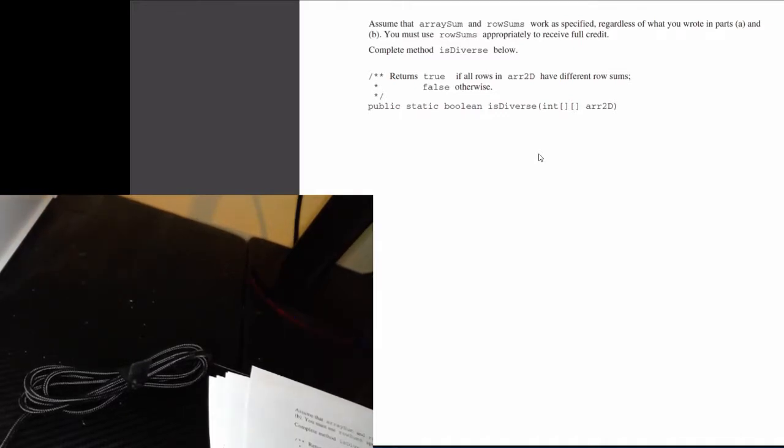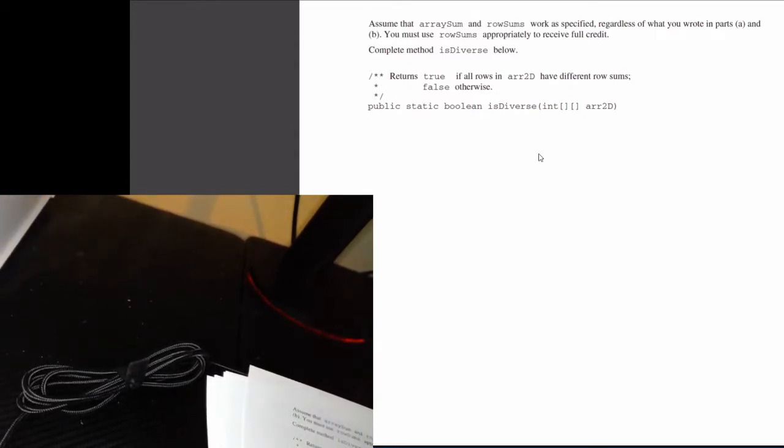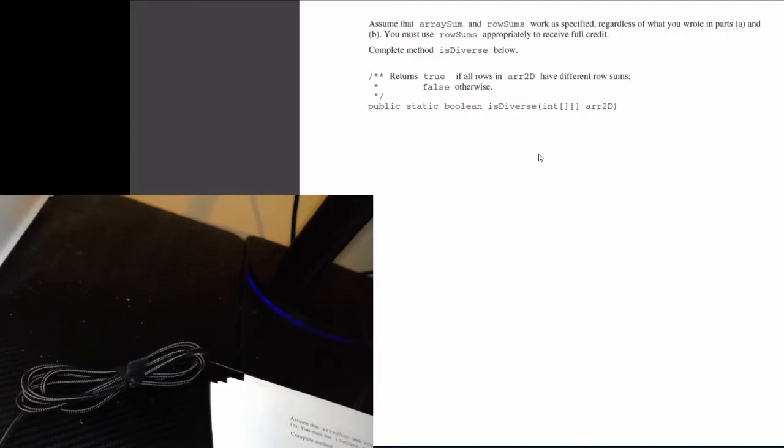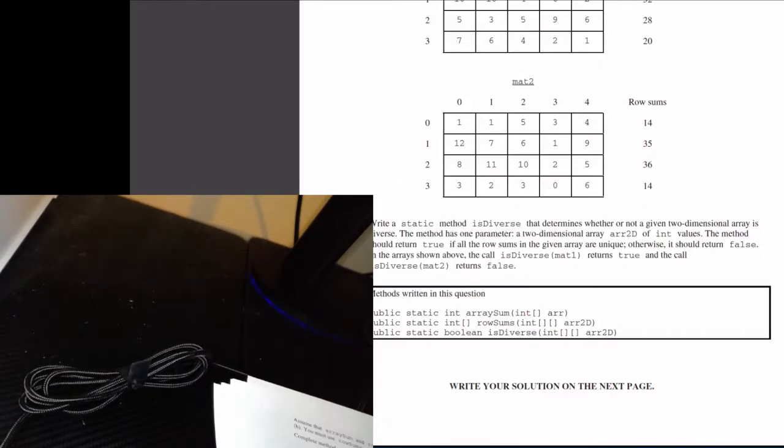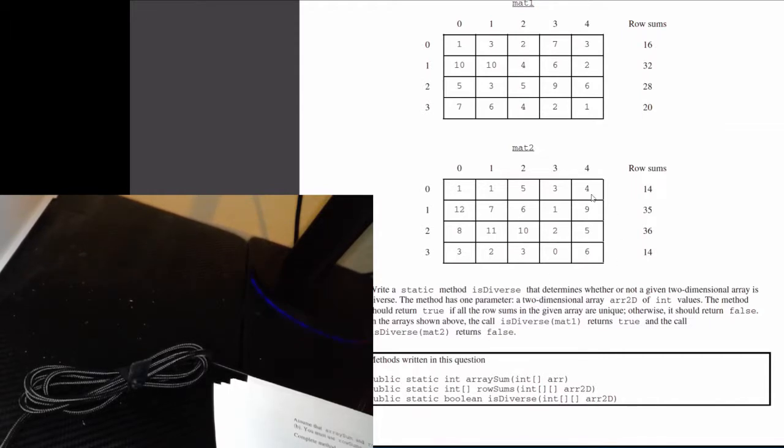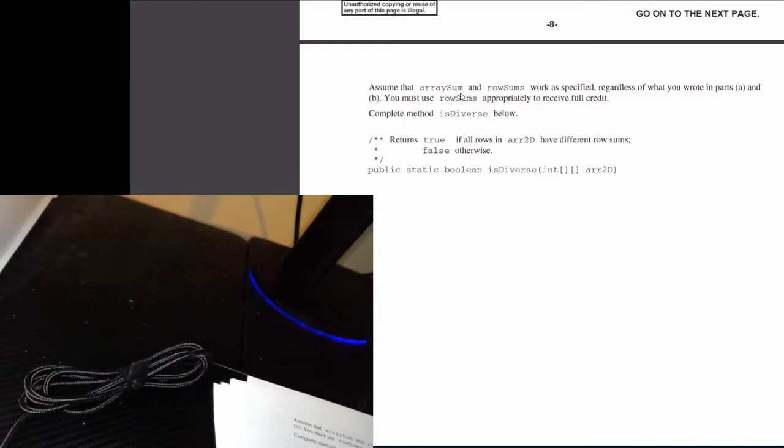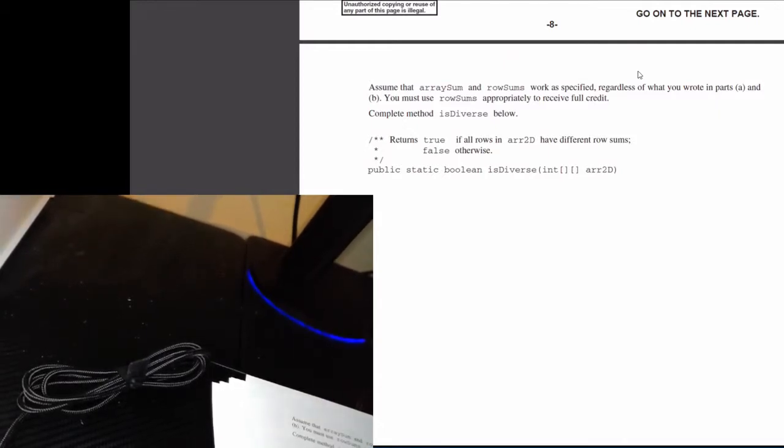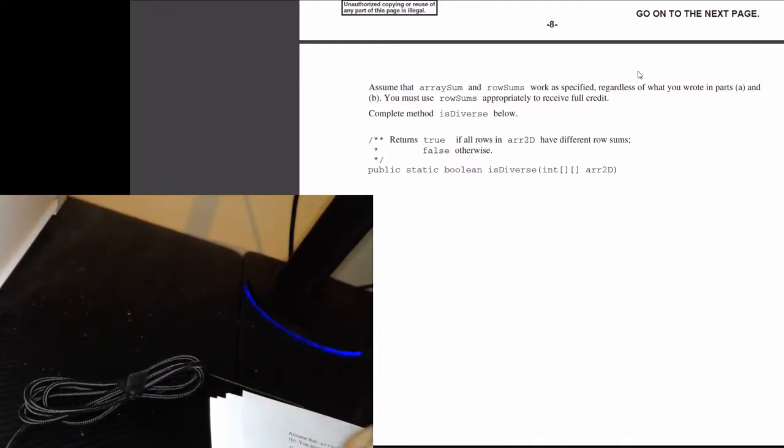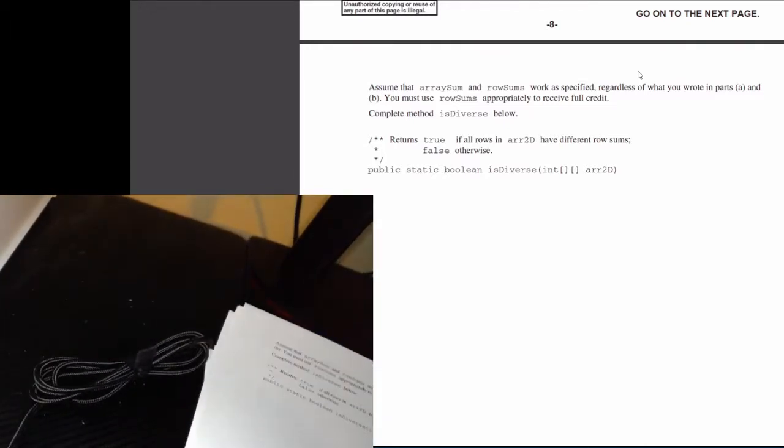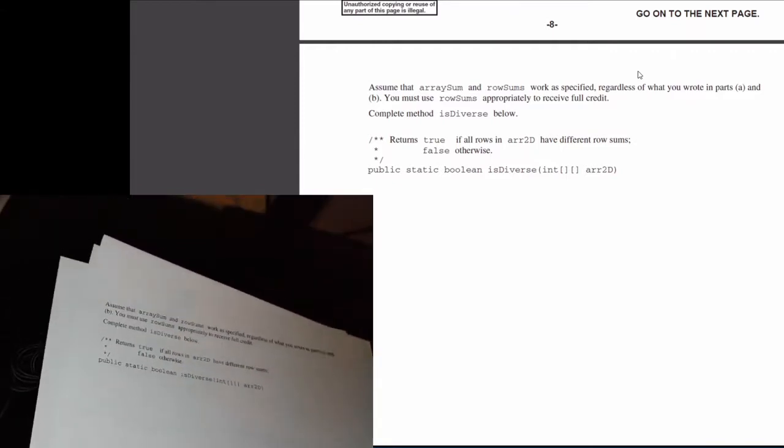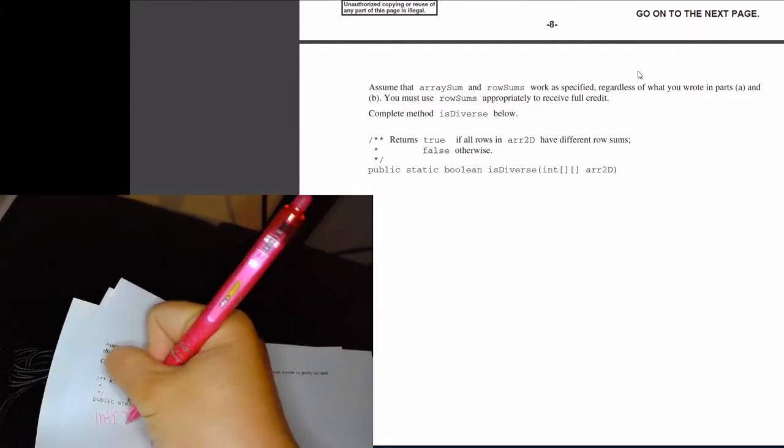Alright, so let's see what we should do first. We know we want to return true or false. I'm not going to specify a Boolean variable, rather I'm just going to return true or false based on the result of a condition statement. What I do need though is I need to determine the sums of a given 2D array. I'm going to create a 1D array that holds integers, and I'm going to call this sums.